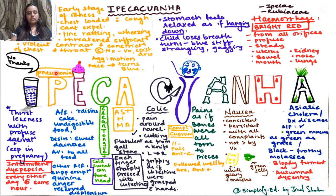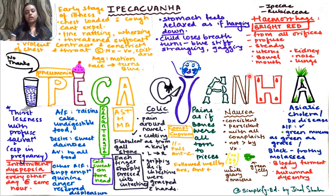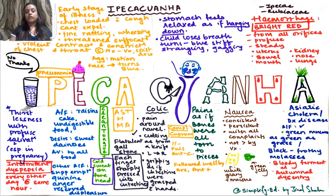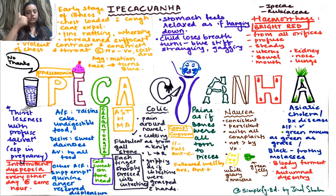In summary: thirstlessness, pneumonia, desire for cakes and dainties, ailments from the same, clean tongue, asthma, colic with knife-like and finger-grasping sensations, blue face, hanging-down sensation in stomach, pains as if bones torn to pieces, persistent nausea, hemorrhagic tendency, and Asiatic cholera with grass-like stools. That completes the full drug Ipecac in under 10 minutes.